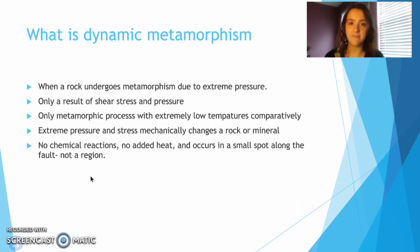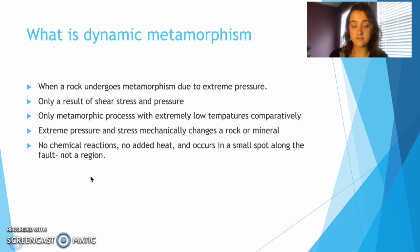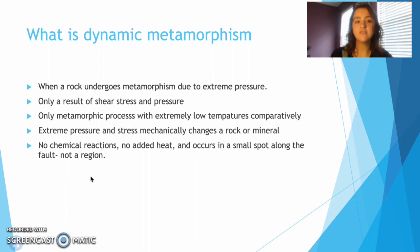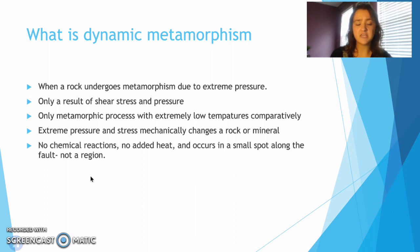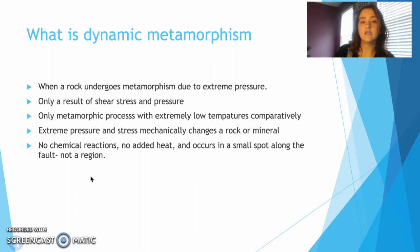What is dynamic metamorphism? Dynamic metamorphism occurs when a rock undergoes the metamorphic process from extreme pressure. This is a result of shear stress and pressure. There is no heat involved — heat has no factor at all, no chemical reactions. It just occurs in a small spot along a fault and not in a region.